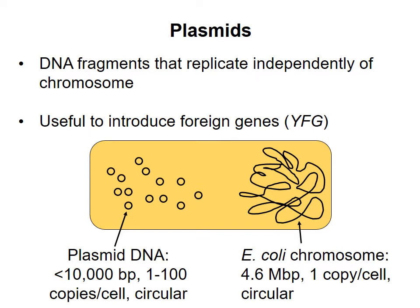Plasmids are relatively small pieces of DNA found in microorganisms that are not part of the organism's genome. Bacterial plasmids are usually circular, double-stranded, and less than 10,000 base pairs in size. Multiple copies of a single plasmid can be present in a given bacterial cell. Plasmids are convenient vehicles or vectors on which a gene of interest can be inserted into bacteria.